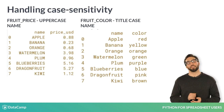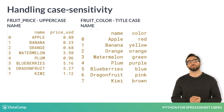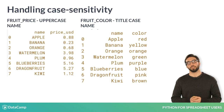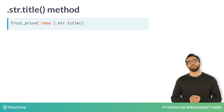Imagine if the price data we parsed had fruit names in all caps, and the color data we parsed had names in title case, where the first letter of each word is capitalized. Because Python is case-sensitive, merging on name would not work. To correct this, we can change the case of a column with the .str.title method.